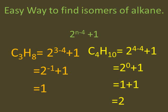For C4H10, which is butane, we replace n with 4: 4 minus 4 is 0, and anything raised to power 0 equals 1. So 1 plus 1 gives us 2 — butane has 2 isomers. It is quite easy to just put the number of carbon atoms in place of n and get the number of isomers of your alkanes. However, this formula is only valid up to carbon 7. After 7, there is a slight change, which we will discuss next.